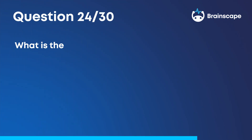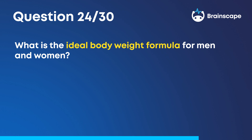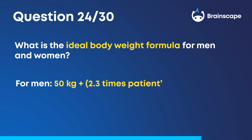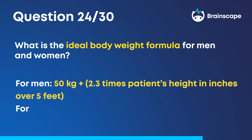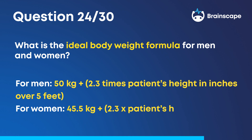Question 24. What is the ideal body weight formula for men and women? For men, it's 50 kg plus 2.3 times the patient's height in inches over 5 feet. For women, it's 45.5 kg plus 2.3 times the patient's height in inches over 5 feet.